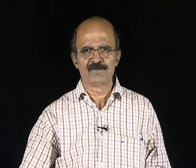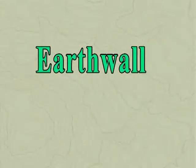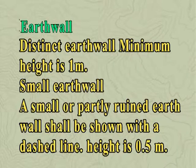An earth bank is an abrupt change in ground level clearly distinguished from its surroundings, such as gravel or sand pits, road and railway cuttings or embankments. The tags should show the full extent of the slope. Impassable banks should be drawn with a symbol, and the line width of very high earth banks may be 0.25 millimetres. A distinct earth wall has a minimum height of 1 metre. A small or partly ruined earth wall shall be shown with a dashed line, with a minimum height of 0.5 metres.